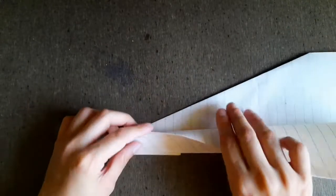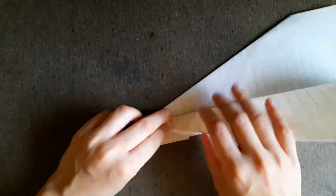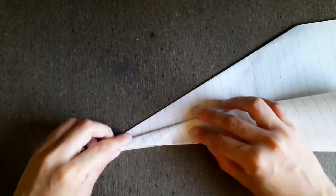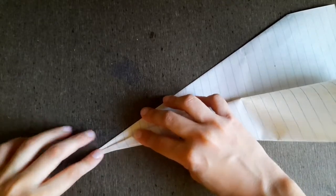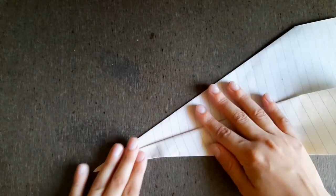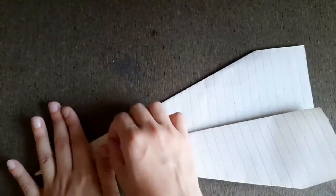Fold this edge to this point so that this edge goes slanting and this edge here matches up. Make a good crease so that it crosses this edge like that.